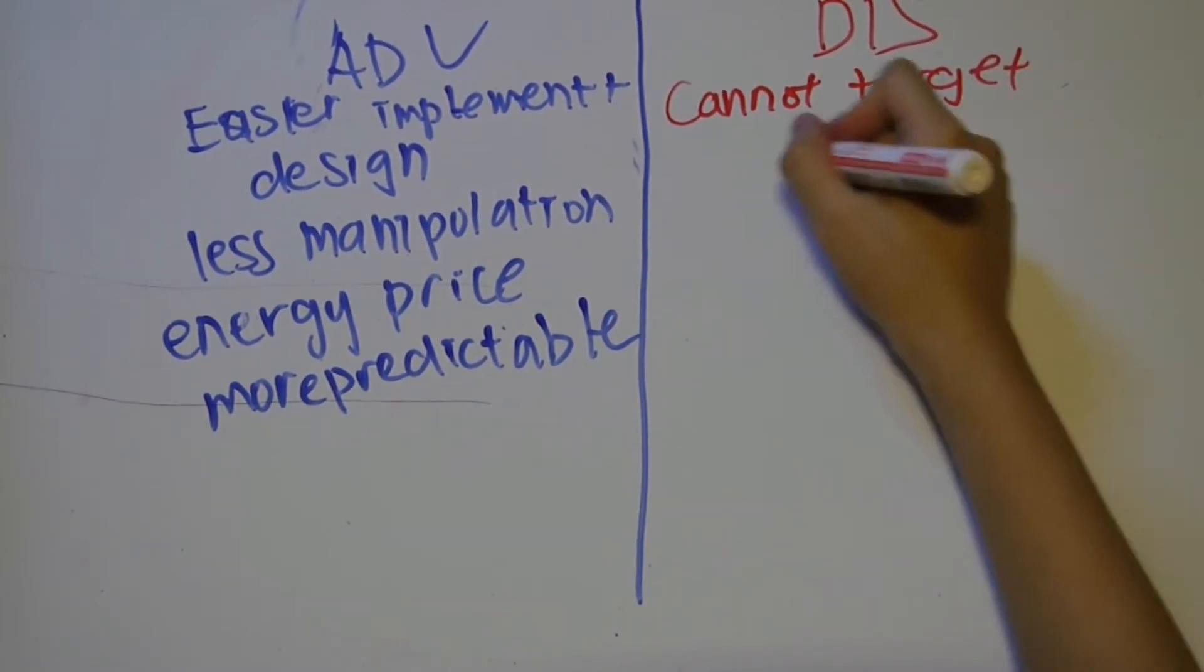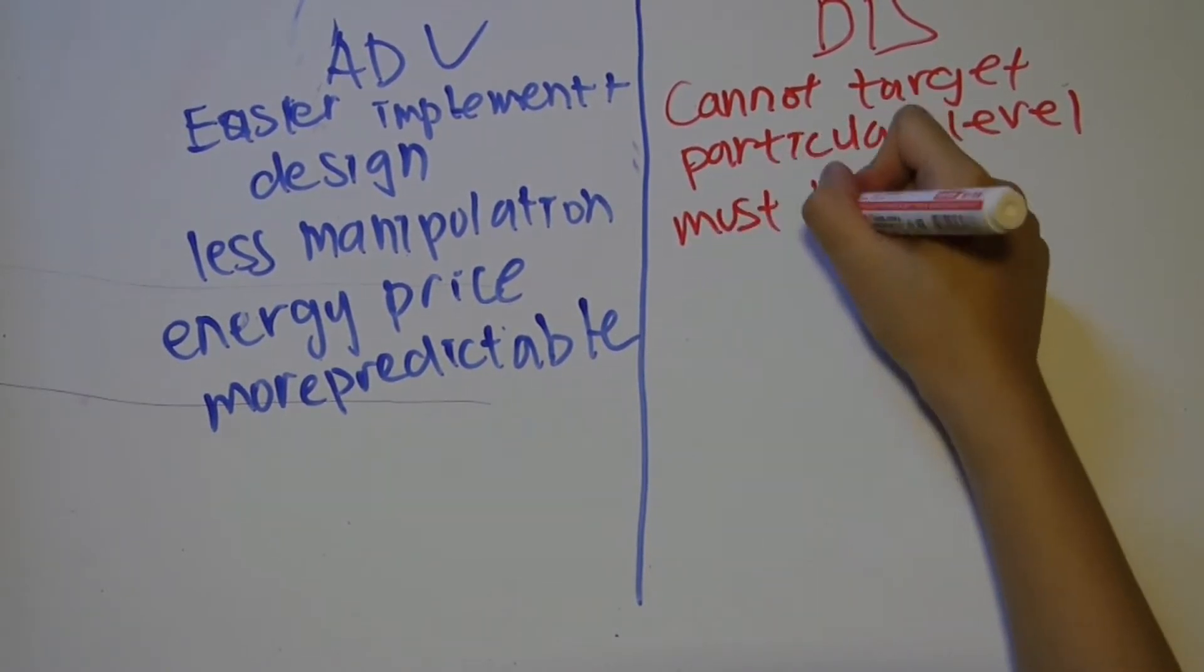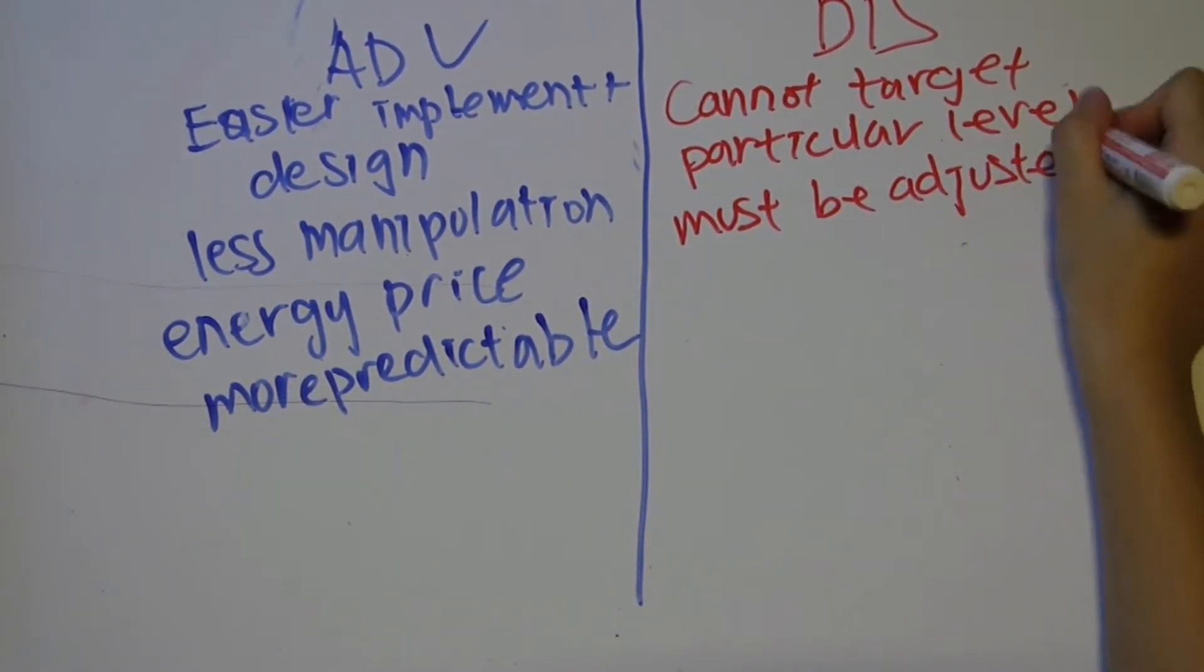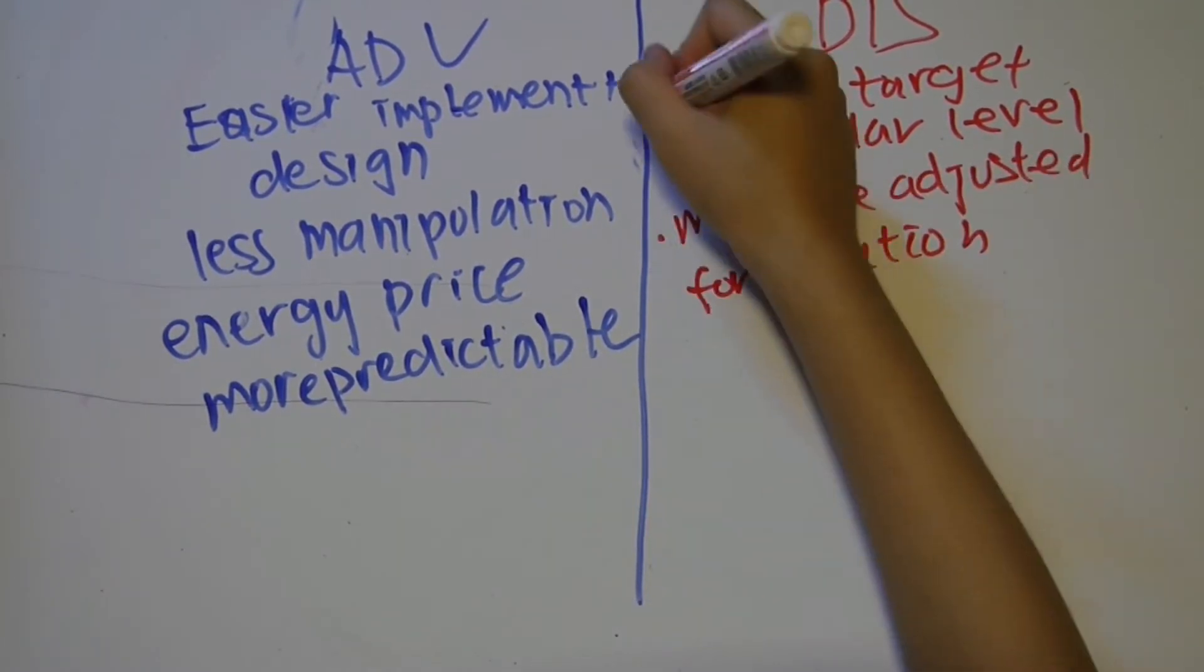However, unlike the cap and trade scheme, carbon tax cannot target a particular level of carbon reduction. During periods of inflation, an upward adjustment would have to be decided by the government.